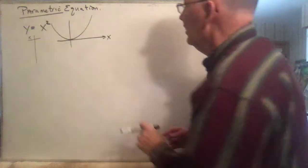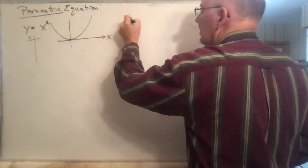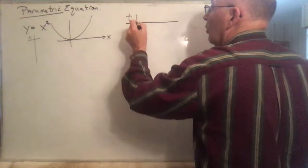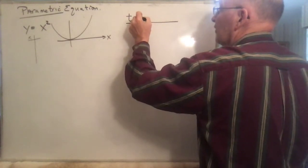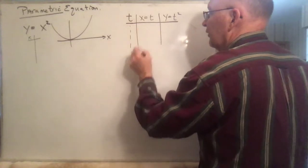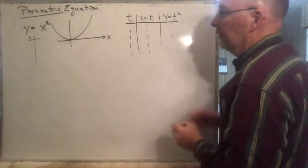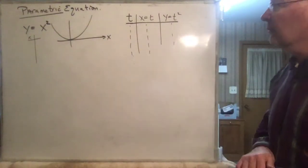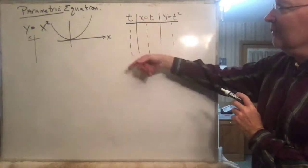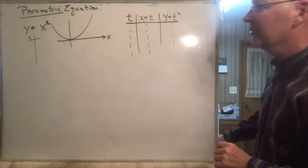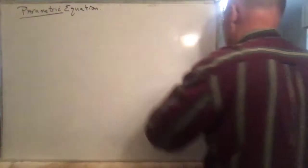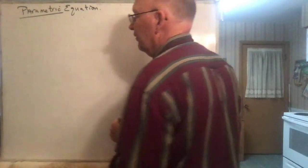Another way of doing it is to have a parameter — t is often used as a parameter — and then both x and y are functions of this parameter t. So x could be equal to t, and y could be equal to t squared. As t takes on all these different values, x takes on those same values, and y takes on the squares. You'll get exactly the same graph as before. You might ask, what's the reason for throwing a parameter in if it just gives you another column to work with?